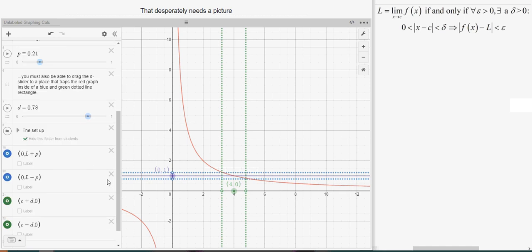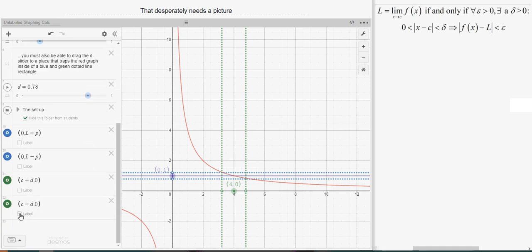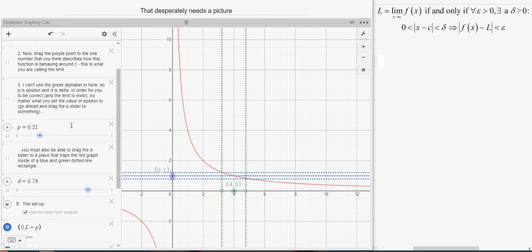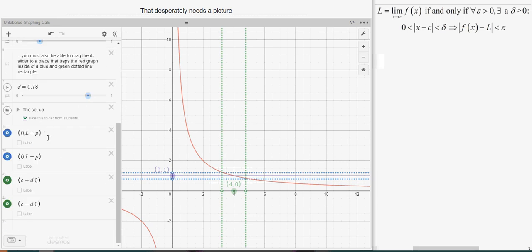And the way that satisfies it is it says that this number that I've chosen, 1, will be the limit if for any epsilon value bigger than 0, no matter how small it is, and we have an epsilon value chosen here of about 0.21,